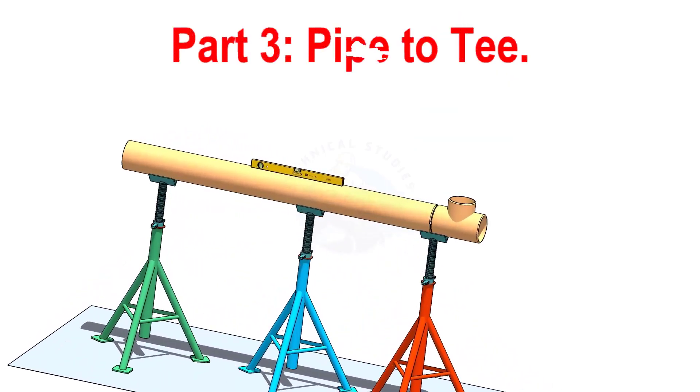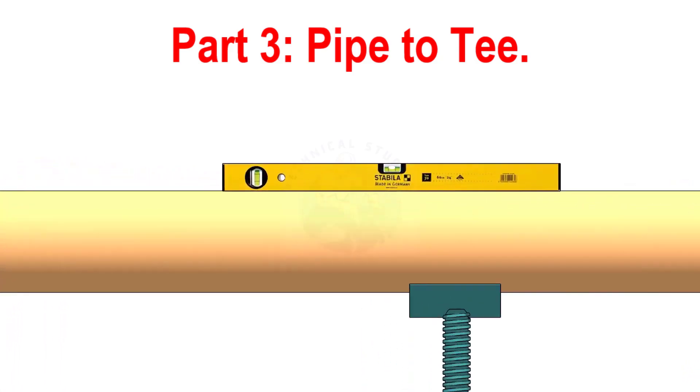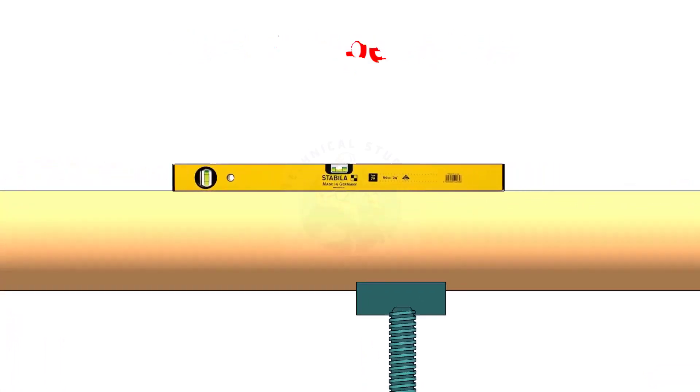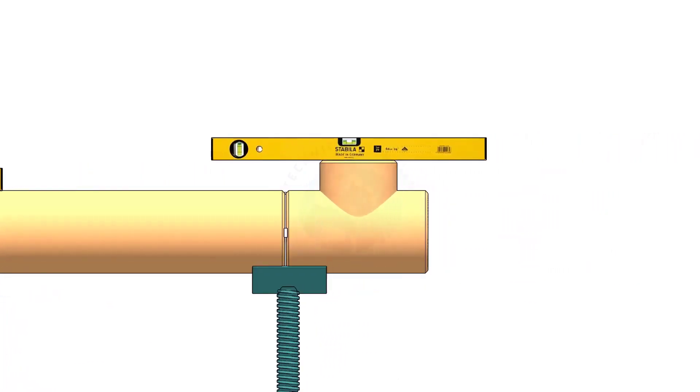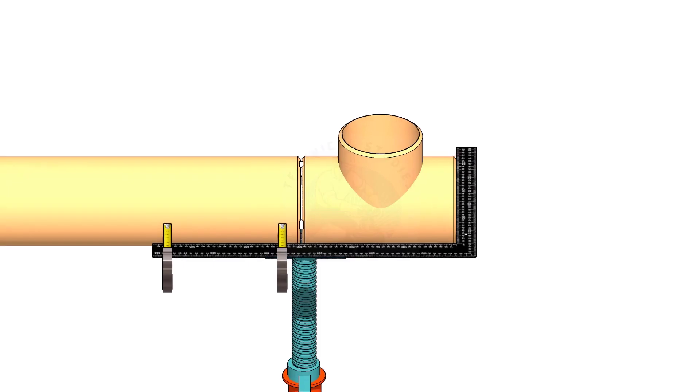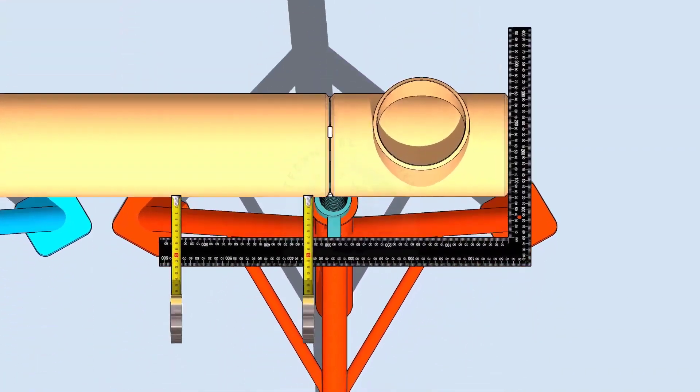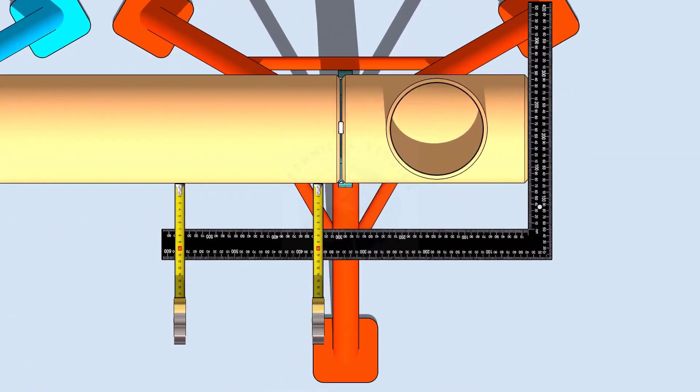When you check a pipe to T fit up, level the pipe first. Then, check the level of the T. After that, hold a large right angle on the face of the T and measure if the distances are the same.